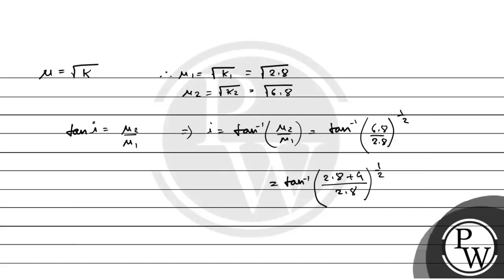This equals tan inverse of 1 plus 10 by 7 to the power half. So we have 4 by 2.8 equals 10 by 7 to the power half.